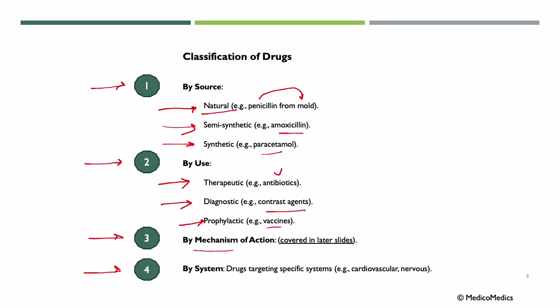Classification by mechanism of action is covered in later slides and lectures. Finally, by system — drugs targeting specific systems, whether it's the cardiovascular system or the nervous system.